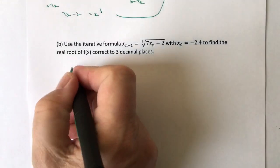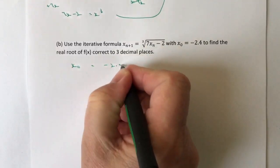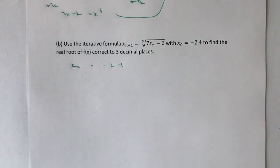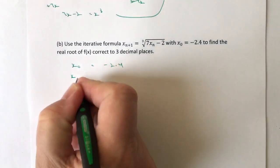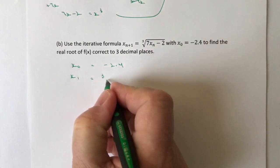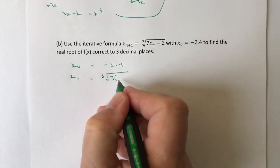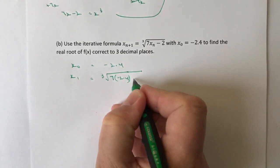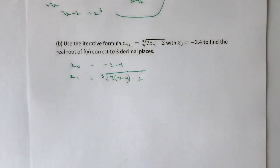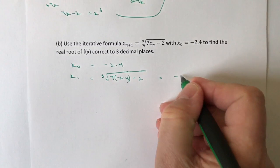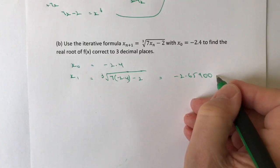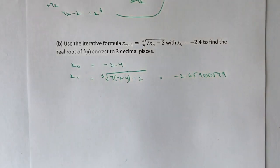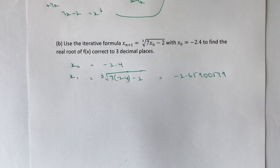So x₀ equals minus 2.4 — no problem. So x₁ equals the cube root of 7 times minus 2.4 minus 2. If you pop that into your calculator, you will get minus 2.65900579. These are definitely calculator questions and you would need a scientific calculator for this.